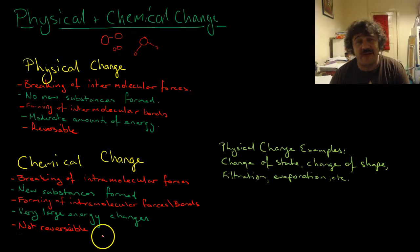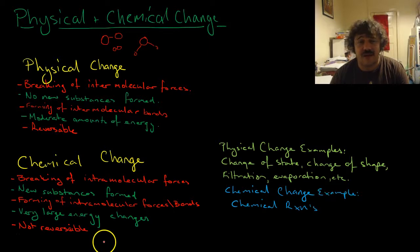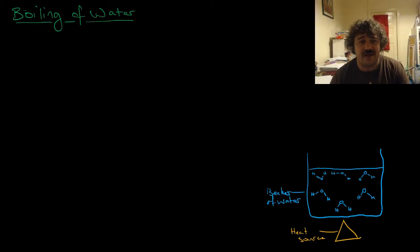Physical change examples are change of state, change of shape. If you bash something or cut it, filtration, evaporation, they're physical changes. Chemical changes are chemical reactions. When you break the egg, that's a physical change. When you cook the egg, that's chemical changes.